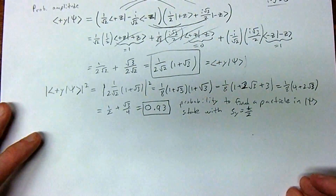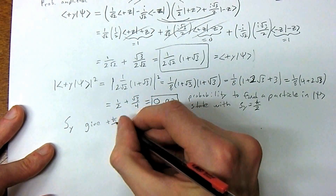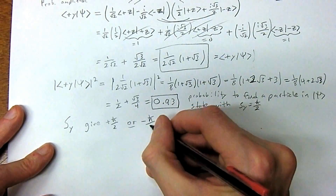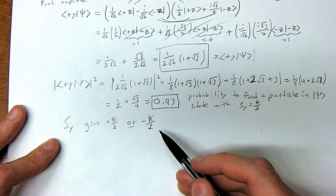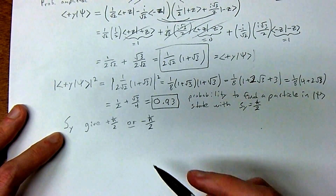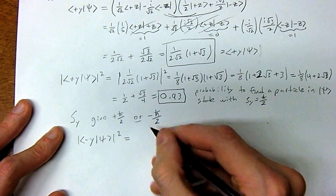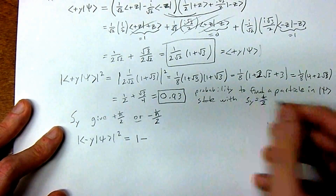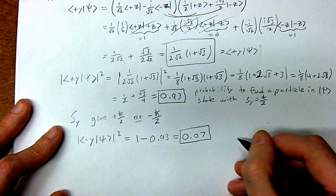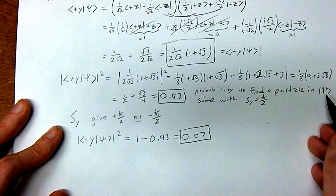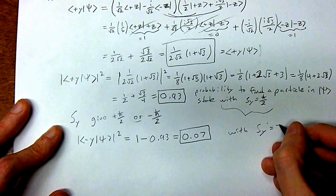Now let's consider the other case. The two possible results for S_y are either +ℏ/2 or −ℏ/2, just like with the S_z and S_x cases. Since the particle must be found in one of these two outcomes, the probability for S_y = −ℏ/2 is simply 1 − 0.93 = 0.07.